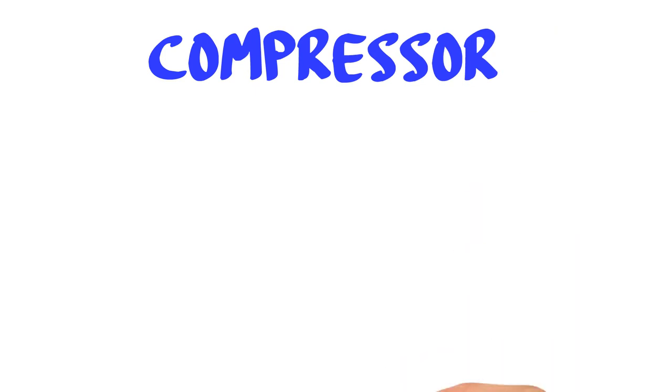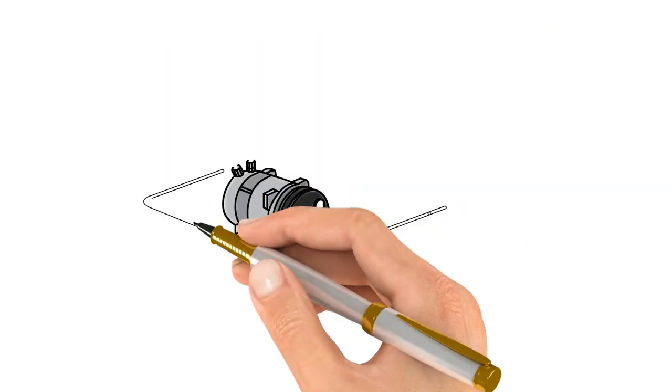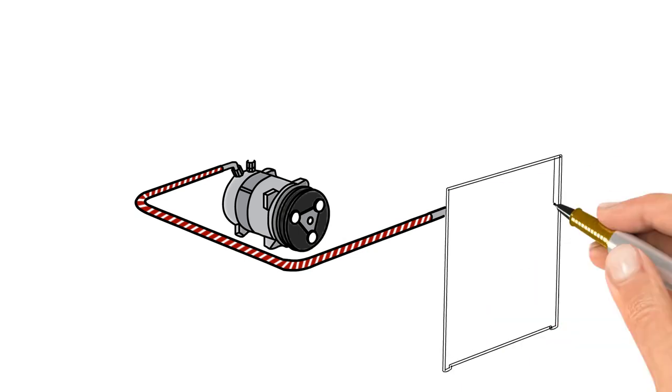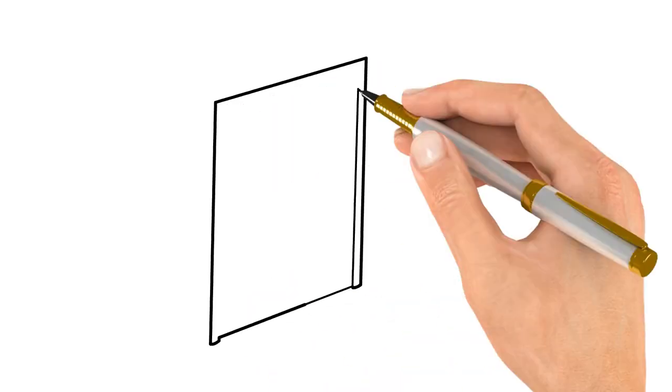When we talk about it being the heart of your system, what the compressor does is actually pump the refrigerant through the system. So we'll start at the compressor, pump our refrigerant in a gaseous form into our condenser, which is in front of the radiator.